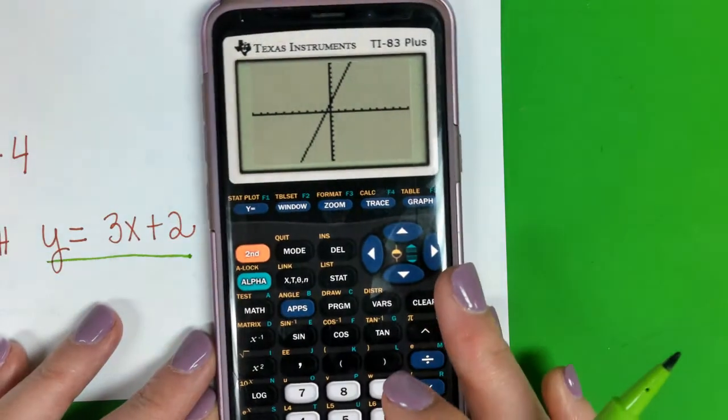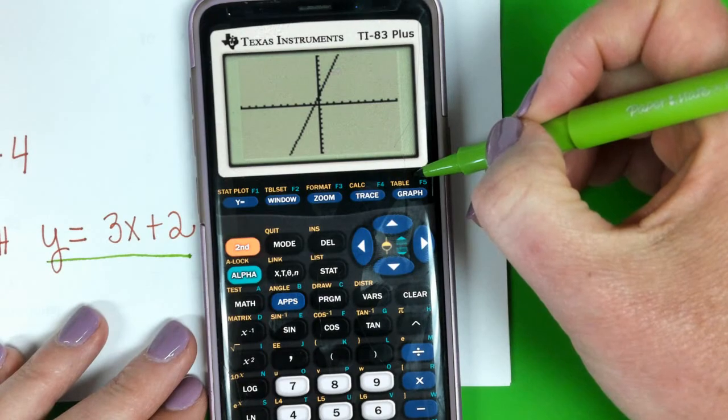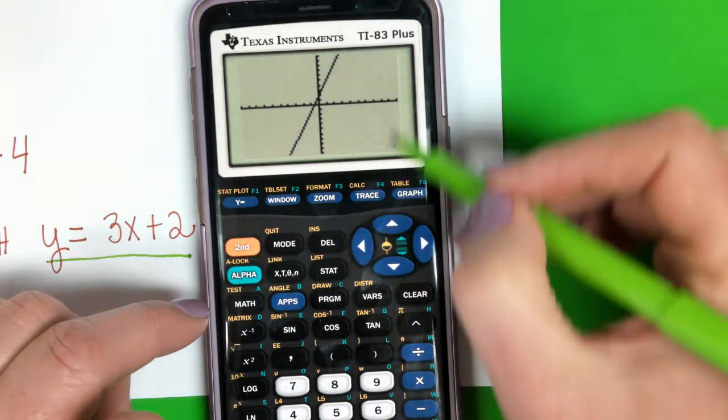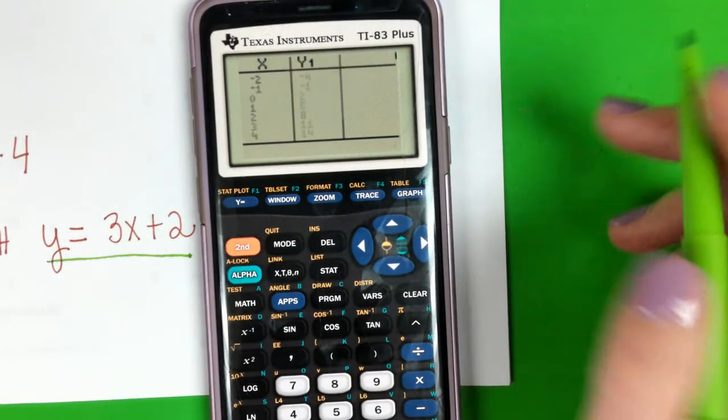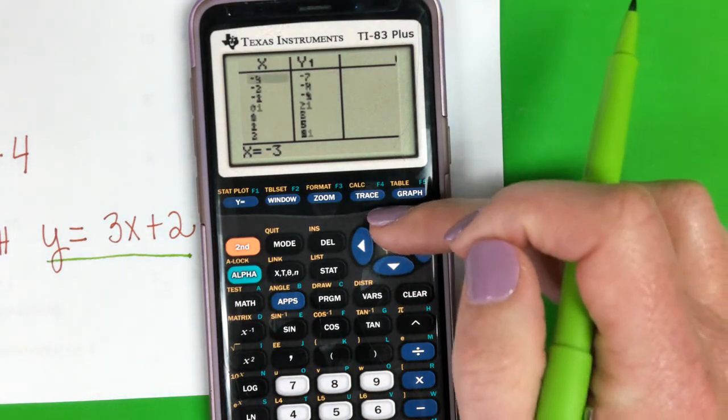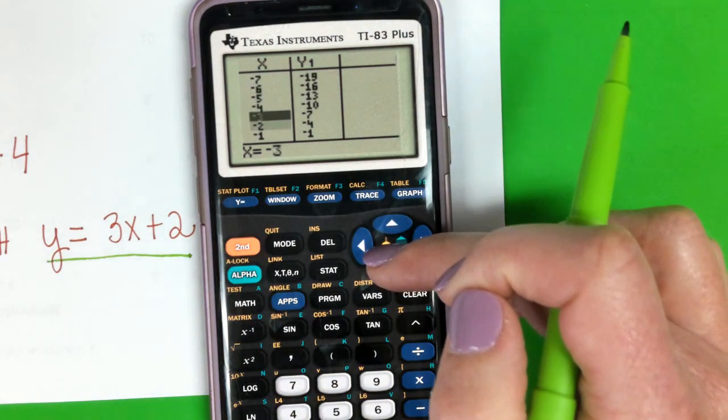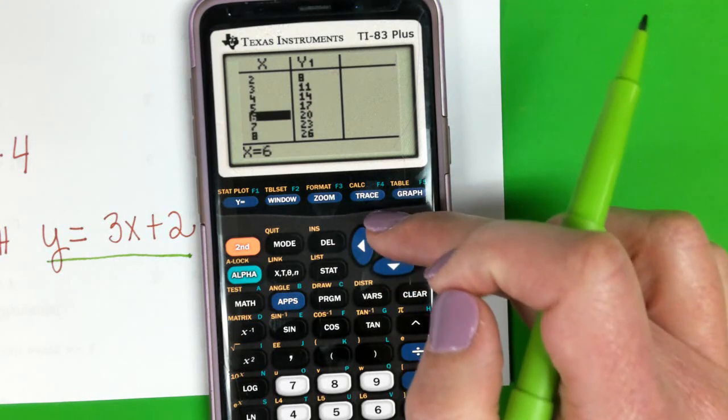Okay, and then the last really important thing I want you to see is our table of values. Notice the table is in yellow, so the table of ordered pairs for this equation—second graph or table—it gives us a list of ordered pairs.